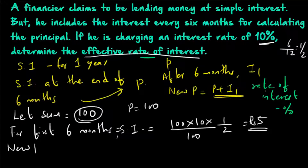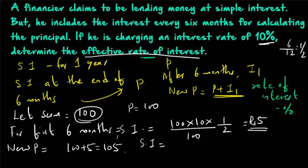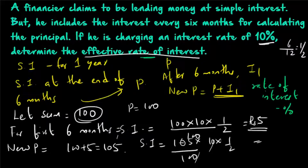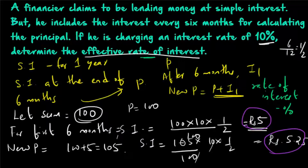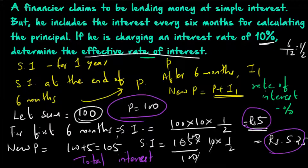What is the new principal for the next 6 months? We have to calculate the simple interest for the next 6 months. The new principal will be equal to 100 plus 5, which is equal to 105. So simple interest for the next 6 months will be equal to 105 into 10 into half, divided by 100. The zeros cancel, giving 105 divided by 20, which is rupees 5.25. So we obtain rupees 5 for the first 6 months and rupees 5.25 for the next 6 months.